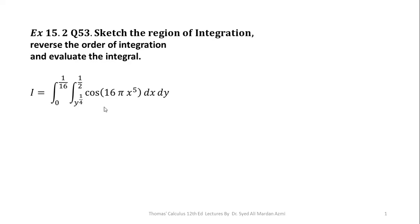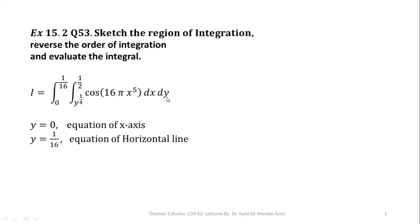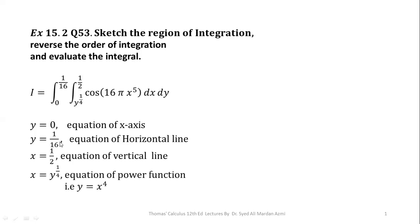In order to get some boundaries, we need some equations, so we will equate our inner and outer variables. When we equate our outer variable with its limiting value, we obtain y equal to 0, which is the equation of the x-axis, and y equal to 1/16, which is a horizontal line passing through y = 1/16 along the y-axis. x equal to 1/2 is a vertical line passing through x = 1/2 along the x-axis. And y equal to x raised to power 1/4 is the equation of a power function, which can be rewritten as y = x^4, which is actually a power function.